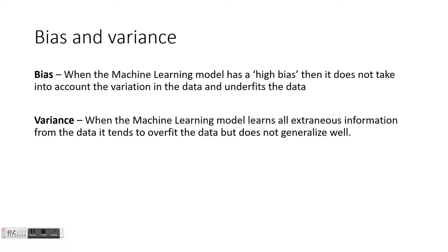An important concept in machine learning is what is known as the bias-variance trade-off. A machine learning model is said to have high bias when it does not take into account the variation in the data and it basically underfits the data. When the model takes into account all the extraneous information and noise in the data it tends to overfit and does not generalize well.